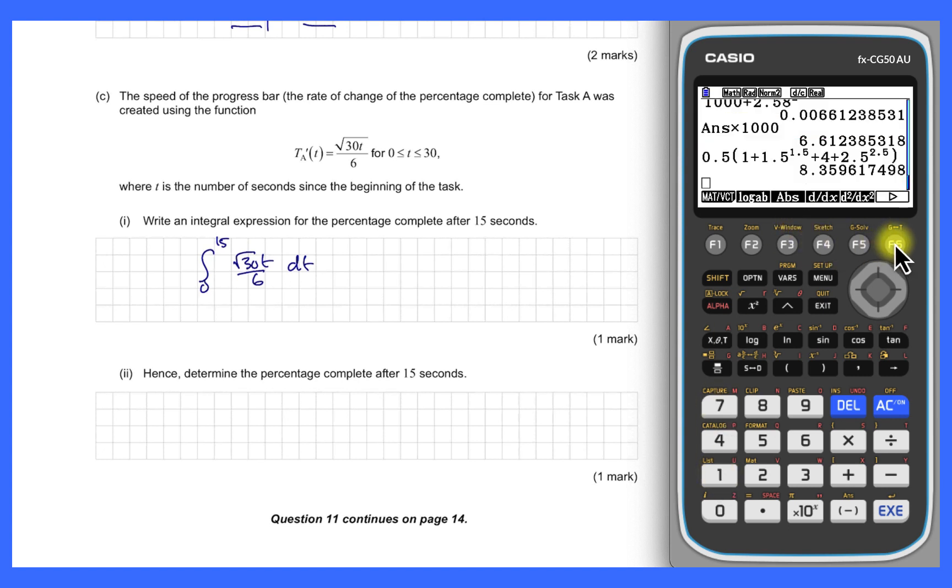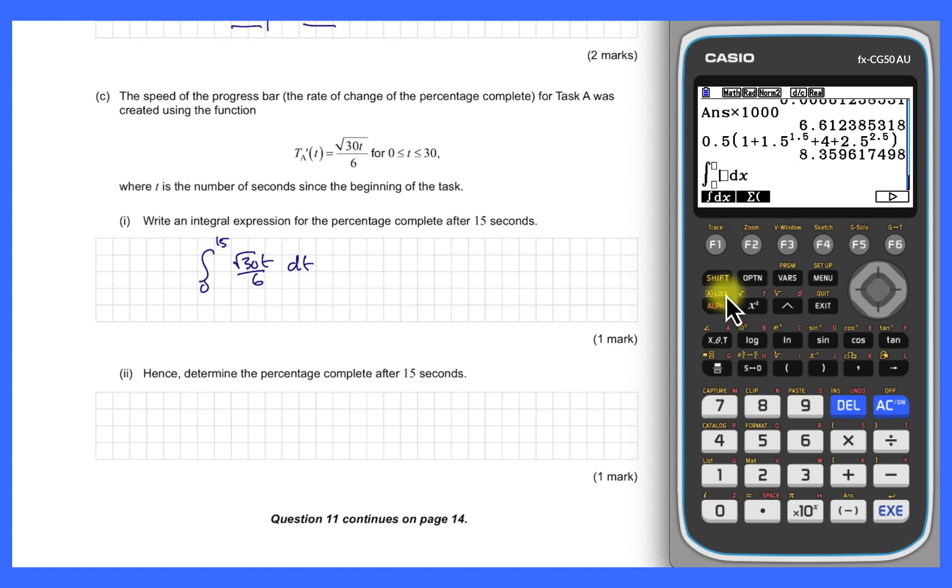Now we need to hence determine the percentage. It's worth one mark, I've got no indication as to method, so I'm going to use my calculator here. I want that integration template. This one's going to be the square root of 30t, make sure the t is underneath, 30x in this case, 6. And that's going to be integrated from 0 to 15. We get 35.36, so 35.4 to three significant figures.